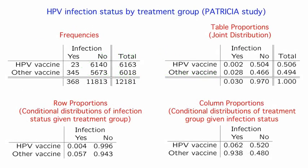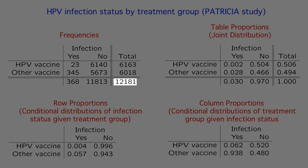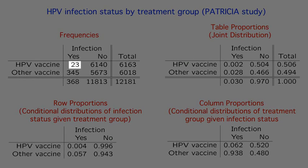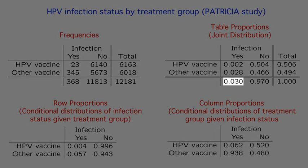Here are four tables constructed from the resulting data. The first is the contingency table of counts, classifying subjects by whether they received the HPV vaccine and whether they acquired an HPV-16 infection. The study was large, with over 12,000 subjects receiving all three doses and approximately equal numbers — just over 6,000 — in each group. Of those who received the HPV vaccine, 23 acquired an HPV-16 infection, while 345 in the other group acquired an infection. The joint distribution of proportions shows that 3% of subjects acquired an infection, with 2.8% in the unvaccinated group.